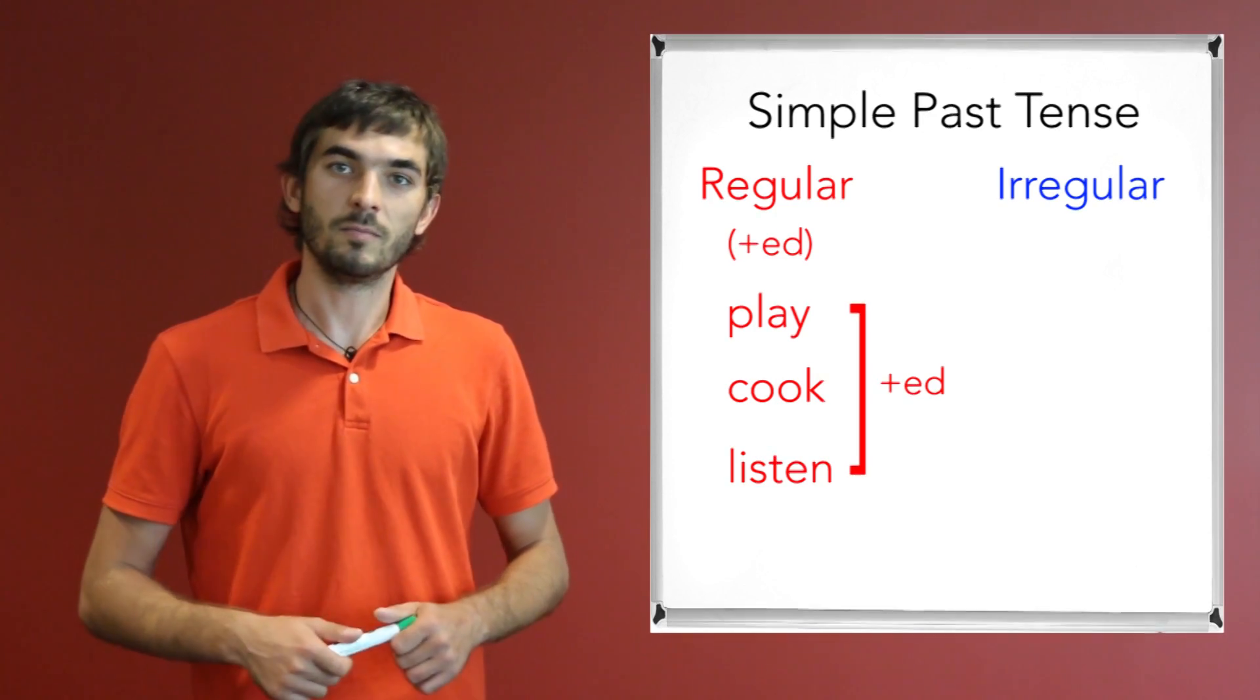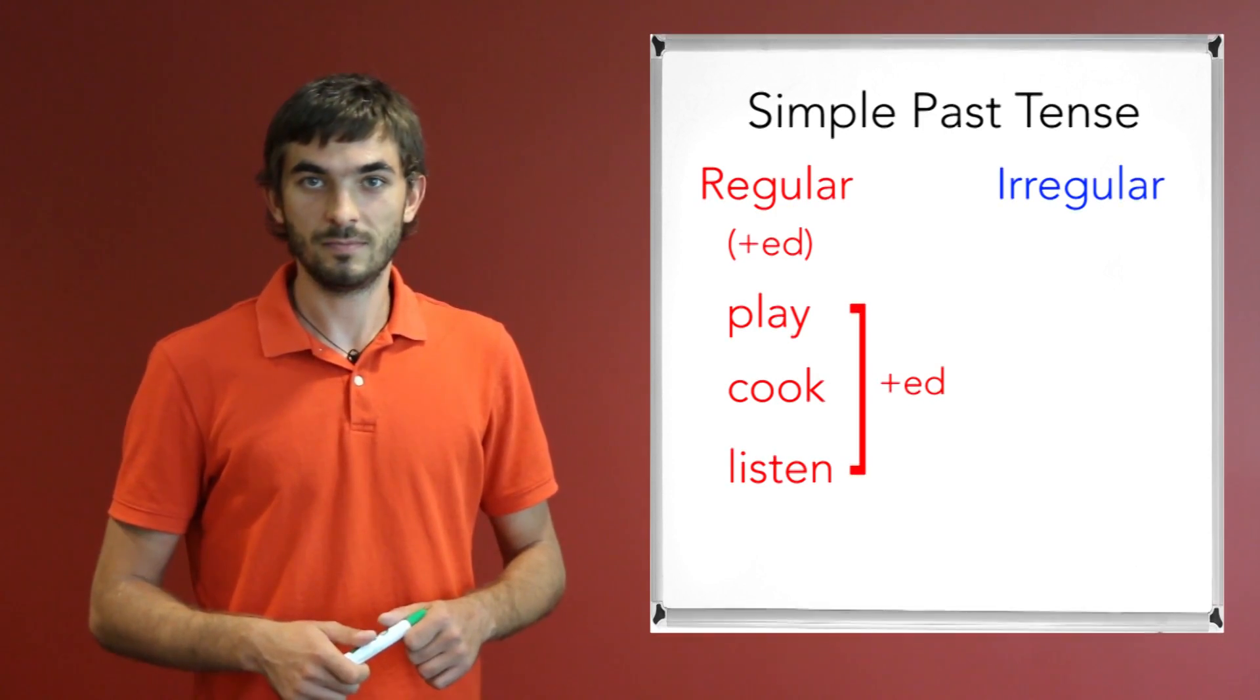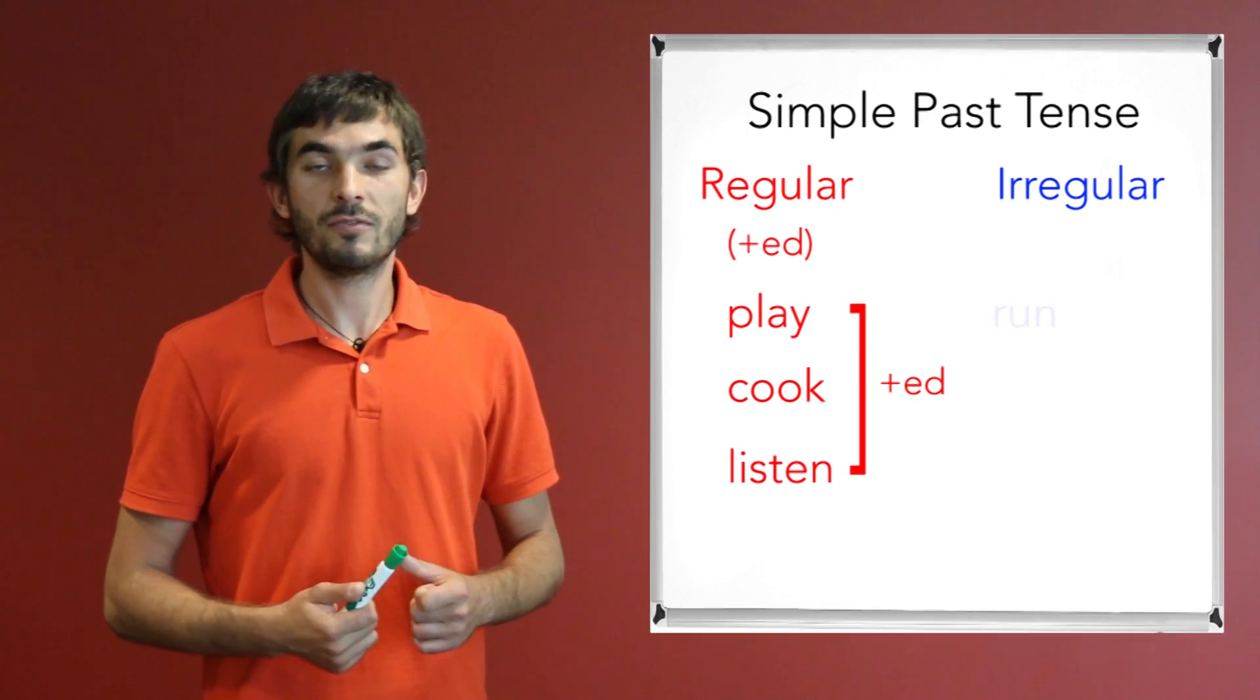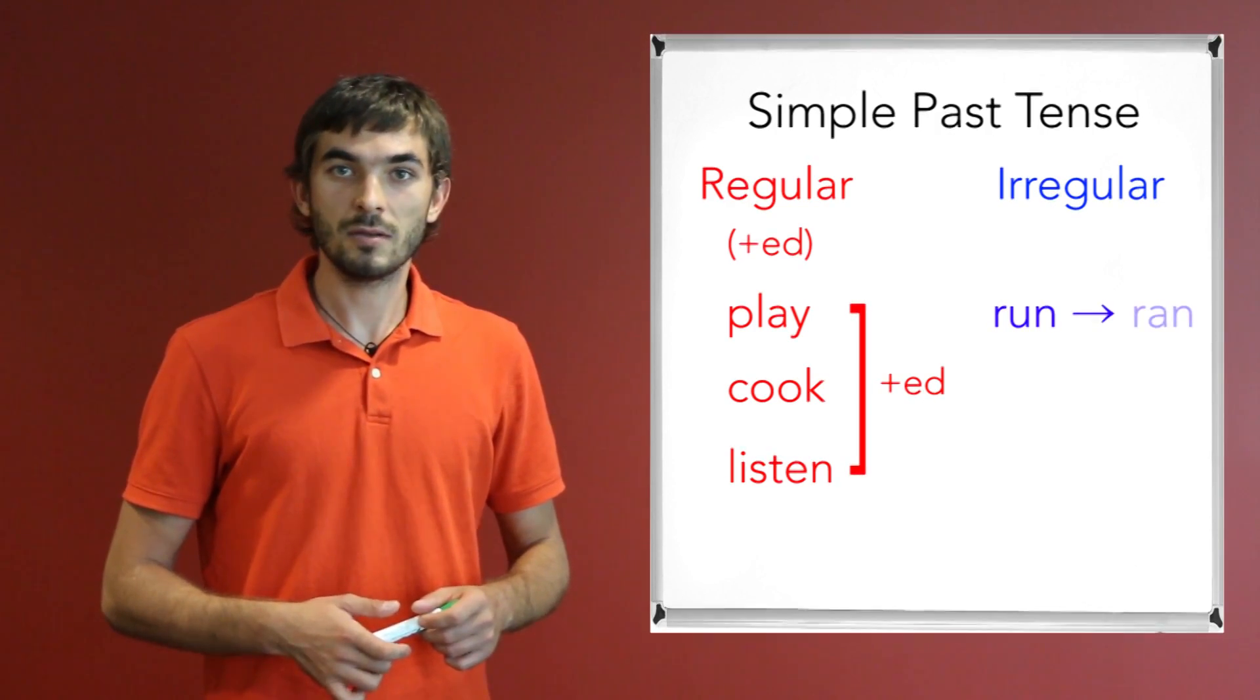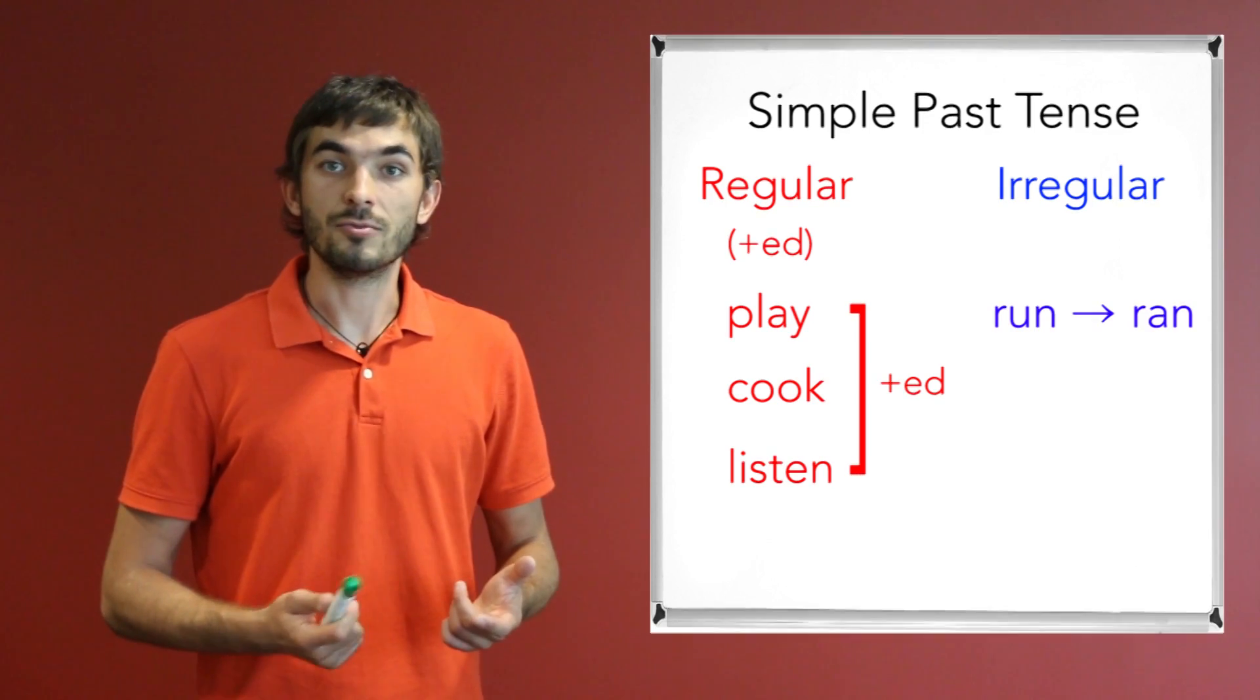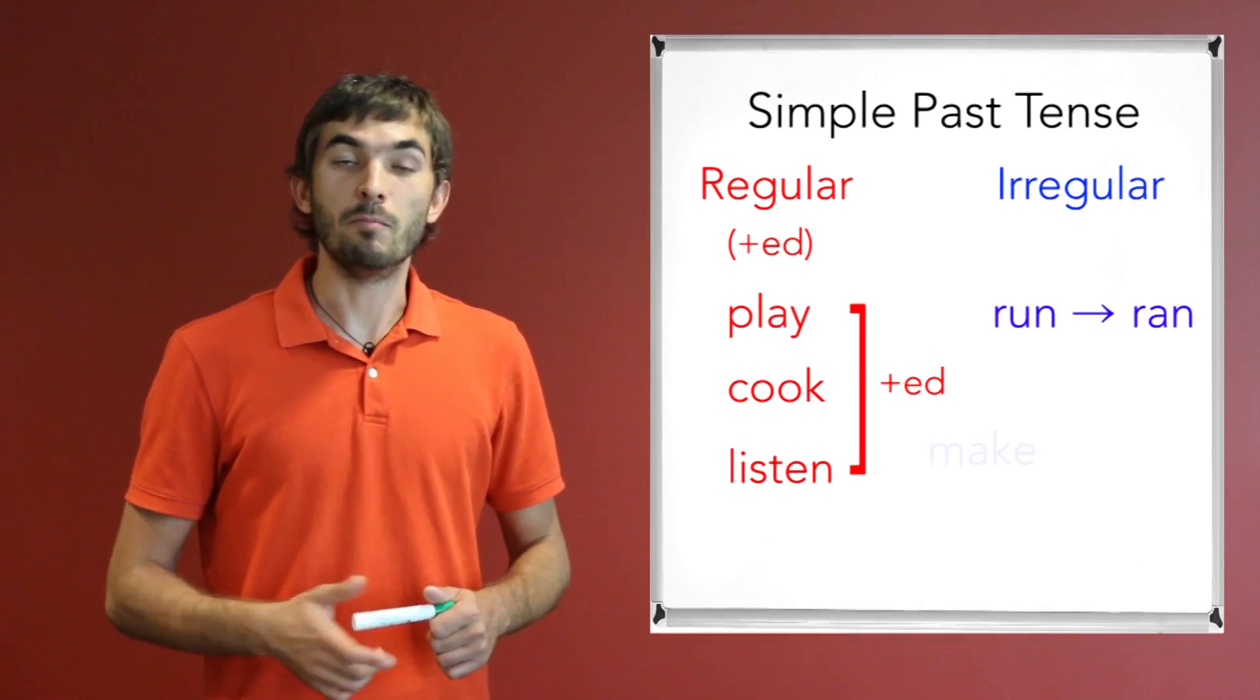Right? The second part of the verbs is irregular verbs. And for example, irregular verb 'run'. The simple past tense would be 'ran'. So we would say, yesterday I ran. Another example, make.